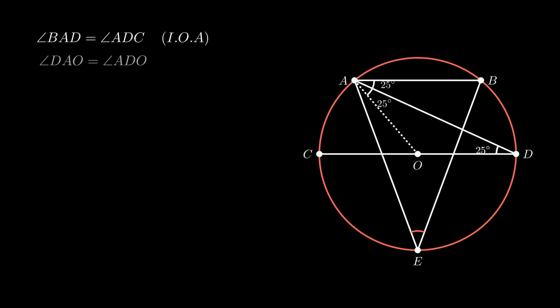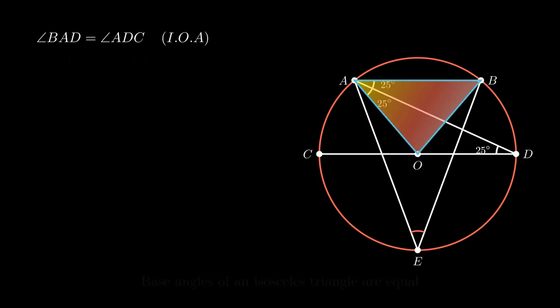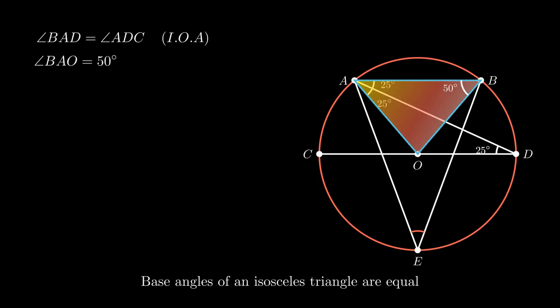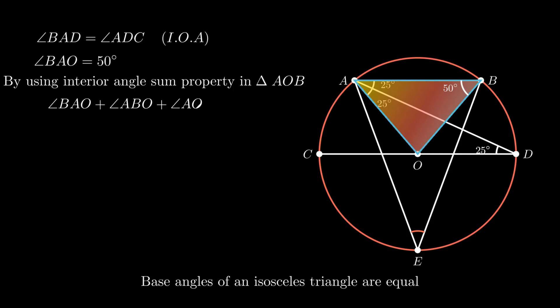Now join center point O to point B, resulting in another isosceles triangle AOB. From the figure, angle BAO is the sum of angle DAO and angle BAD, therefore angle BAO equals 50 degrees. Since base angles of an isosceles triangle are equal, angle ABO also measures 50 degrees. In triangle AOB, by using the interior angle sum property, we get angle AOB as 180 degrees minus 100 degrees, which is equal to 80 degrees.